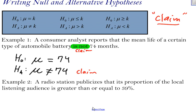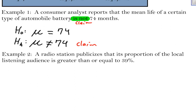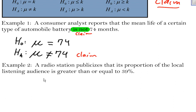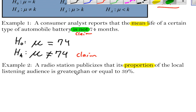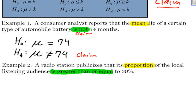If I scroll down, a radio station publicizes that its proportion of local listening audience is greater than or equal to 39%. Well, the first thing I want to point out is that I'm not talking about a mean. I'm talking about a proportion. Up here, I was looking at mean, but in this one, I'm looking at a proportion. So instead of using μ, I'm going to use p.